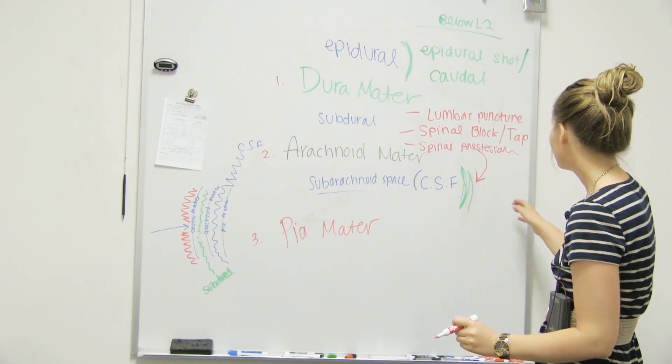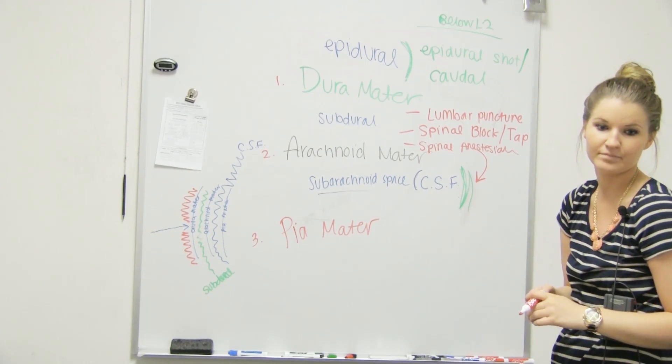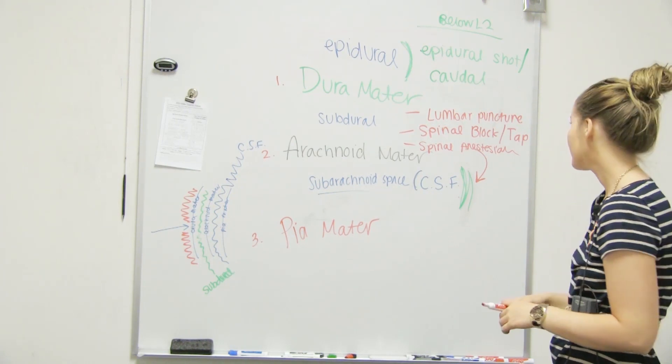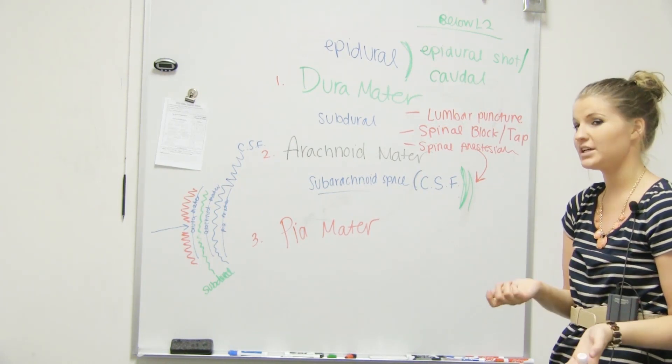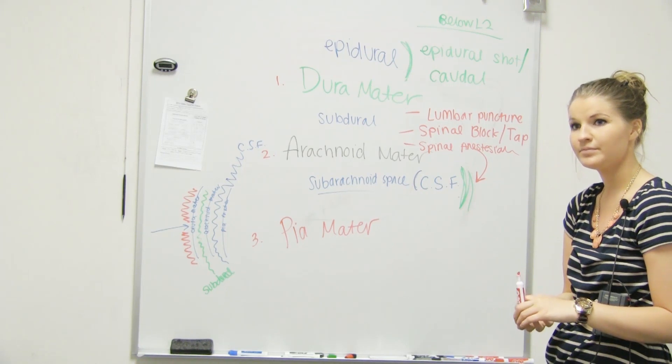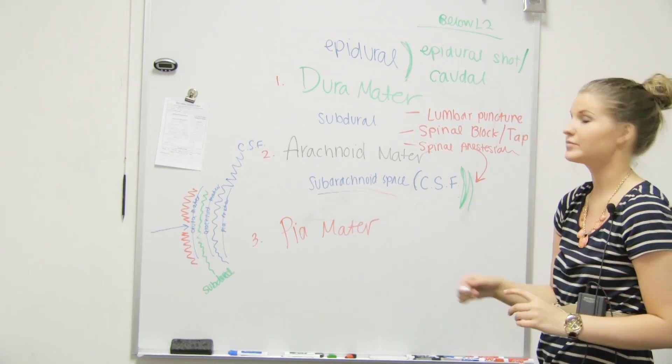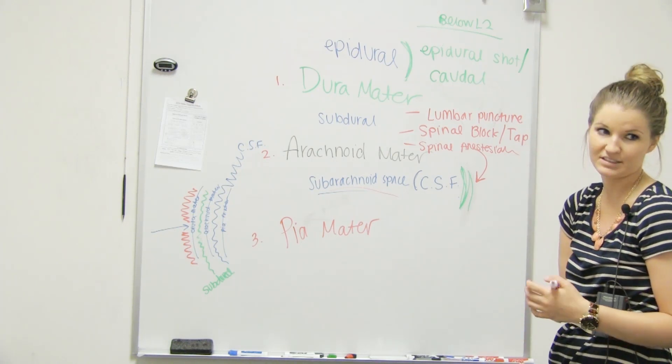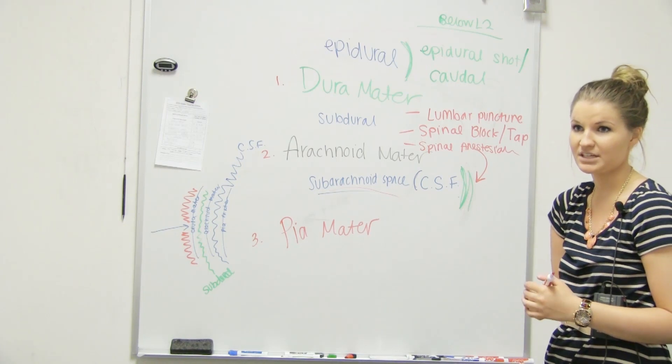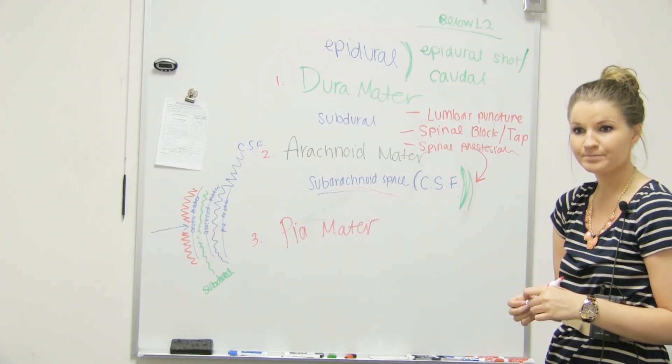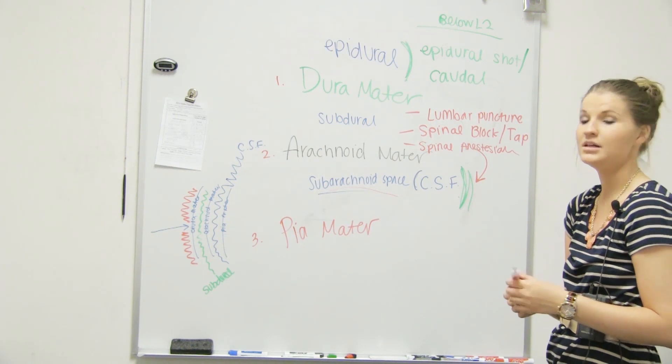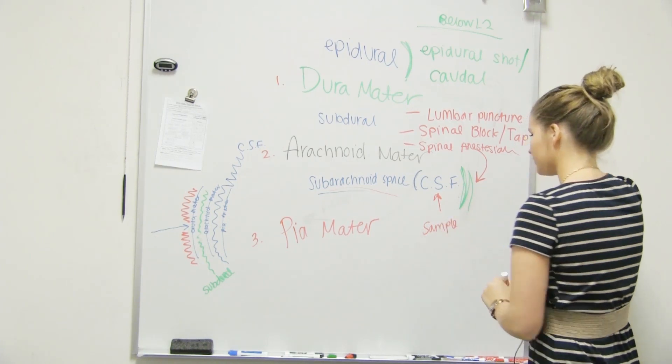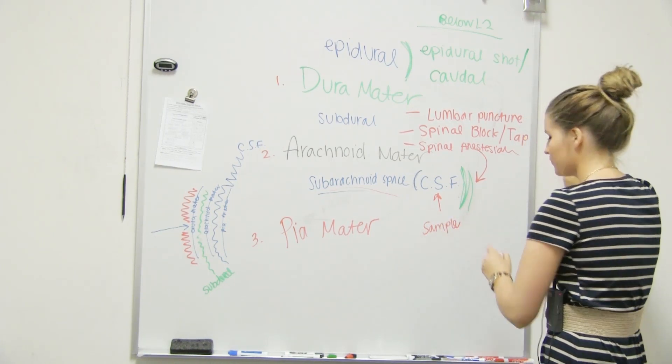Or if you said where would you take a sample of your CSF? In the subarachnoid space. So they're going to do a lumbar puncture, spinal block, spinal tap, spinal anesthesia, or if you were taking a sample of your CSF or your cerebral spinal fluid.